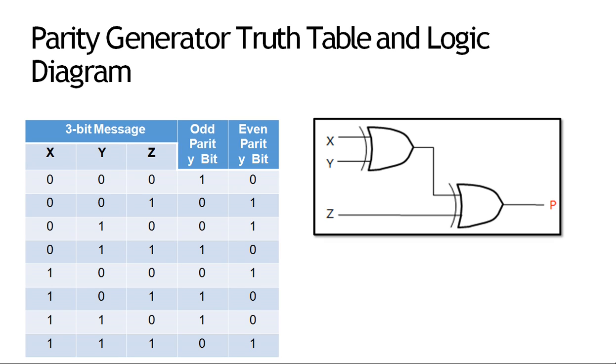तीन bit का message है। यह parity generator की truth table है जिसमें तीन bit का यह message है — x, y, z मेरे पास message की bits हैं।